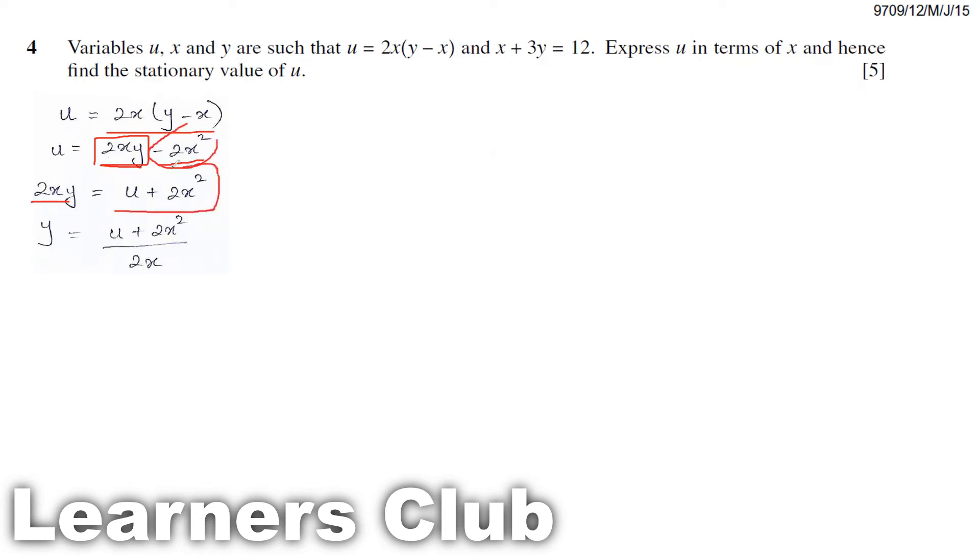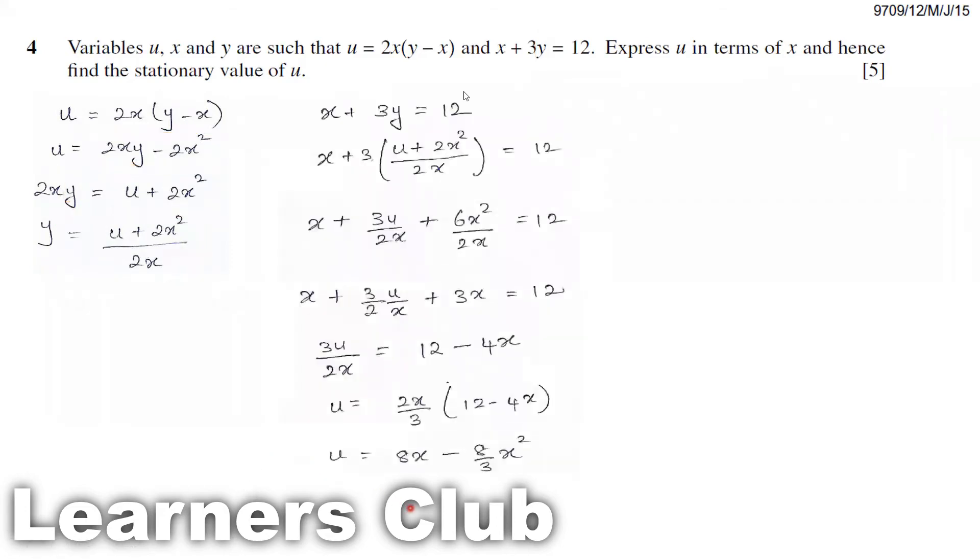Now this value, I substitute in place of y in this equation. You can see here what I have done. In place of y, I've substituted (u plus 2x squared) over 2x. Then I open the bracket, so 3 into u becomes 3u over 2x. 3 into 2x squared, that is 6x squared divided by 2x, equals 12.